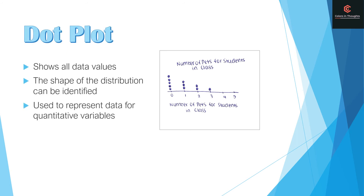Dot plot. A dot plot shows all of the data values and the shape of the distribution can be identified. It is used to represent data for quantitative variables.